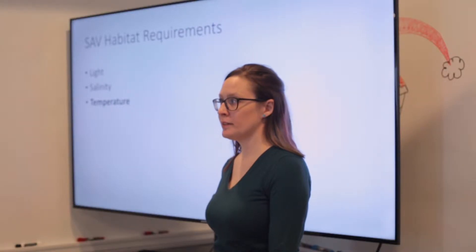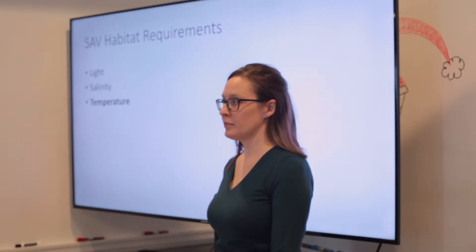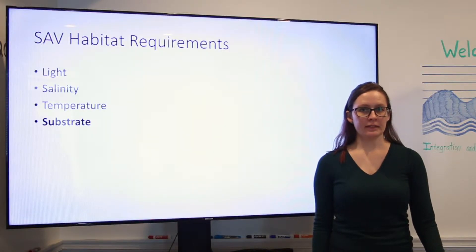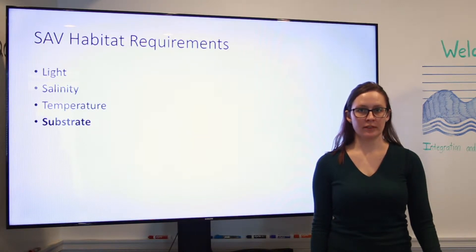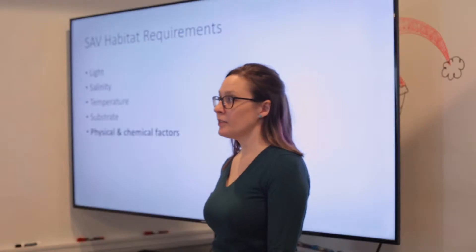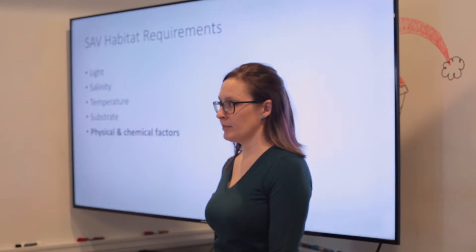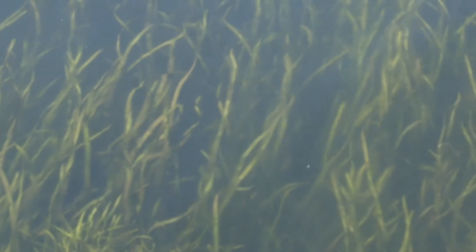Temperature is extremely important to SAV, and many species require warm temperatures in order for seeds to germinate and to grow. Substrate also influences SAV growth — some species need sandy substrates while others prefer muddy or silty. A variety of physical and chemical factors, including turbulence and nutrient content of the water, also impact SAV growth, and overall water quality is extremely important.